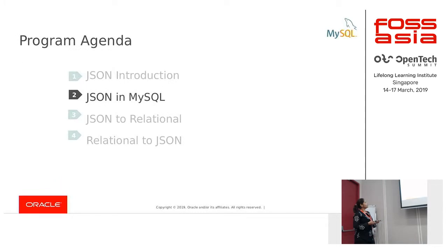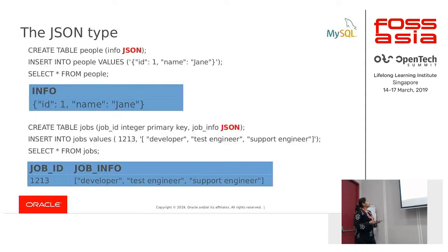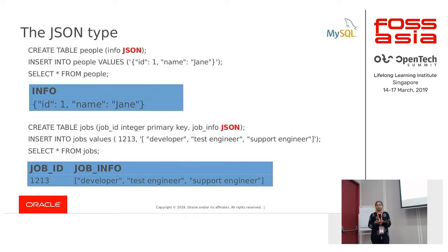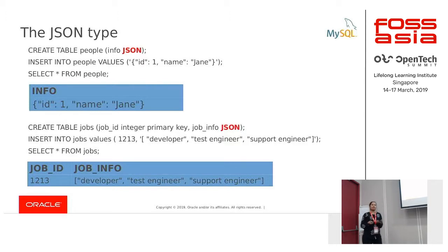We'll look into what kind of support MySQL has for handling JSON data. We introduced the JSON feature in MySQL 5.7. There were three parts to it: the first is the JSON data type, the second is a set of JSON functions which can be used to create, modify, and query the data, and the third is a generated column feature. The generated column helps you to index a particular key in a JSON column.